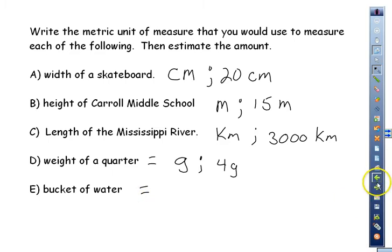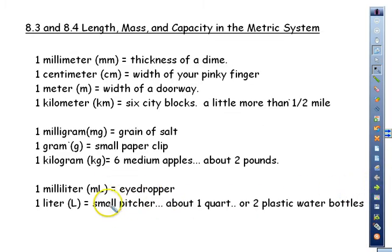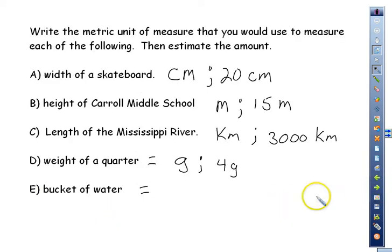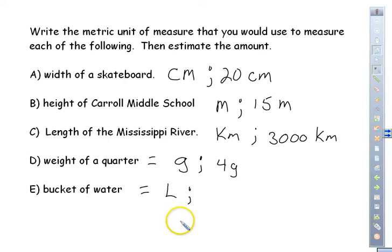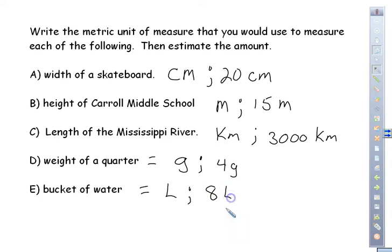For a bucket of water, we're measuring capacity. An eyedropper full is too small, so we'll use liters. If a liter is about one quart and we estimate two gallons of water in the bucket, with four quarts per gallon, that gives us about eight liters.